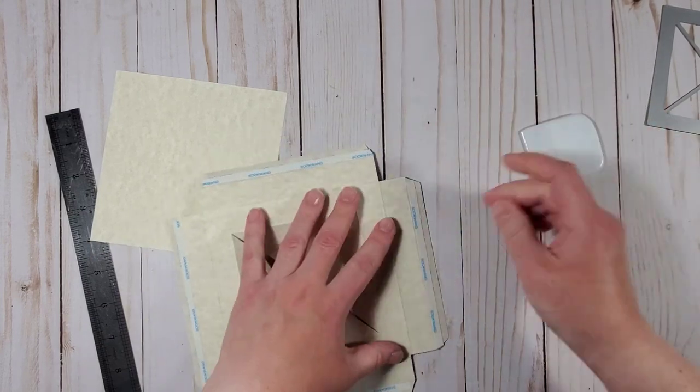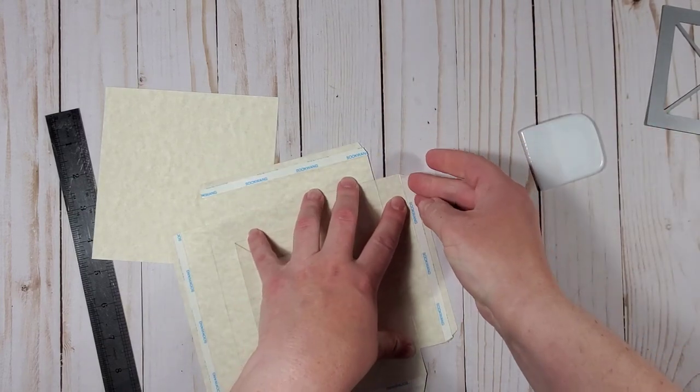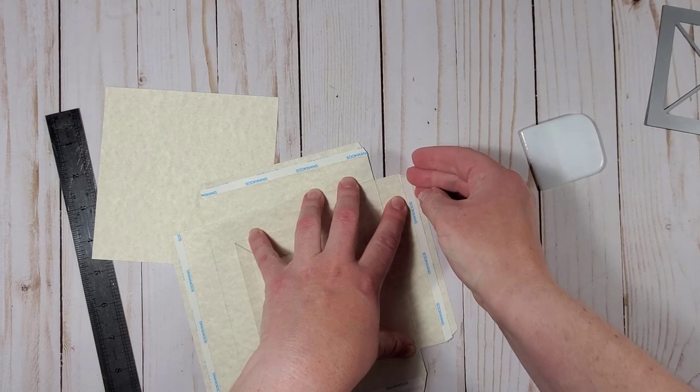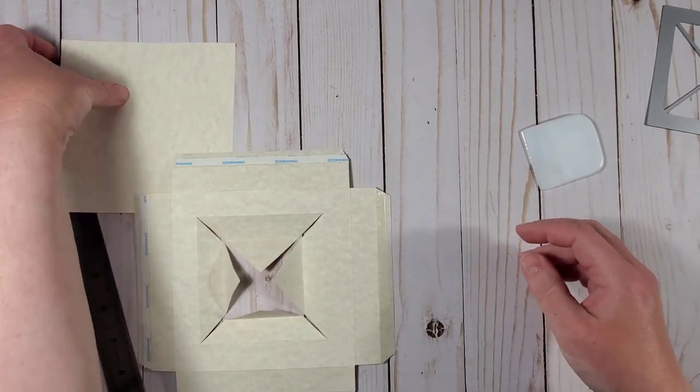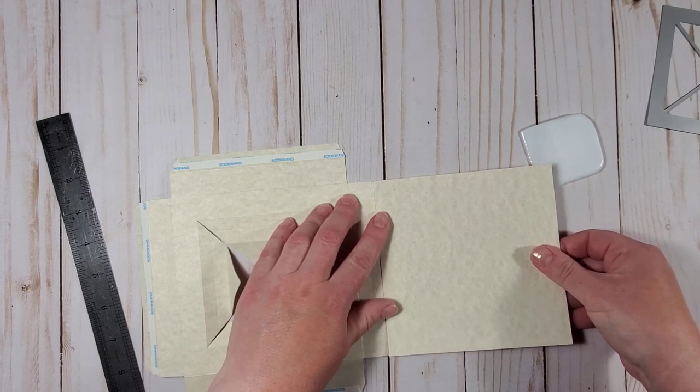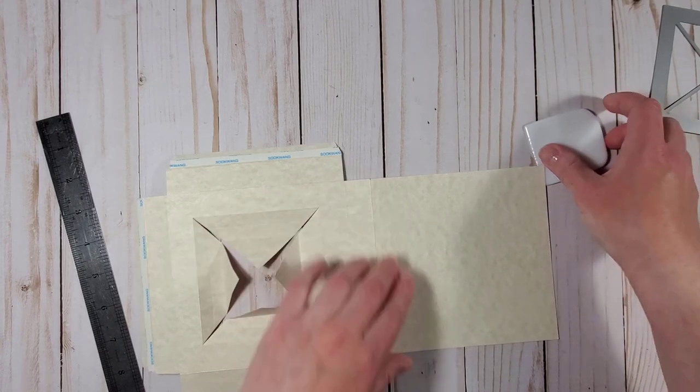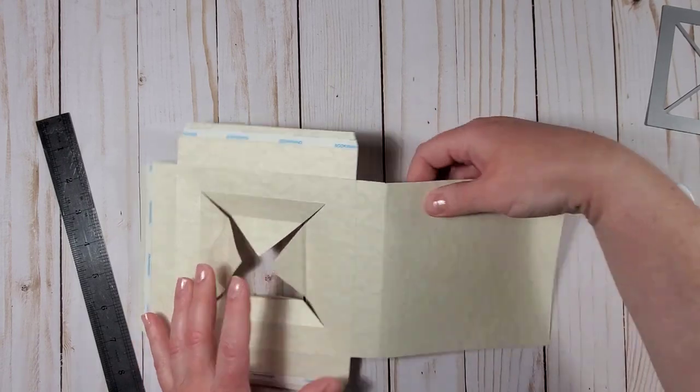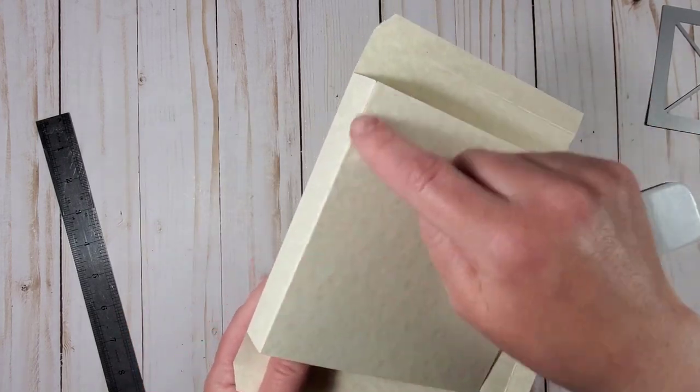So now I will take the backing off that score tape on one of the flaps and I will attach the five and a quarter by five and a quarter cardstock piece to that flap making sure that I don't overlap the score line.